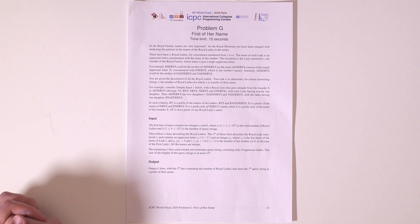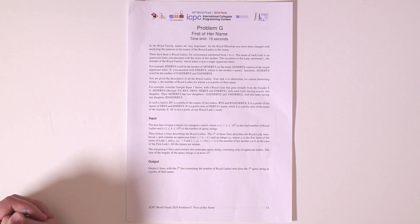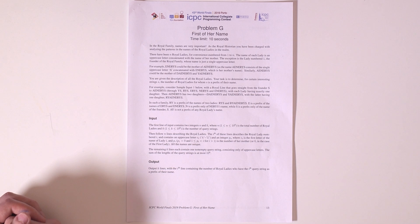The problem statement is about some names of ladies in the royal family that append one letter to the beginning of the name of their mother to make their own name. And the question is you have the structure of ancestry in form of a tree. You need to find for some patterns the number of names that have this pattern as a prefix.